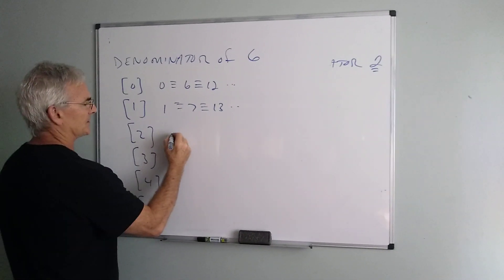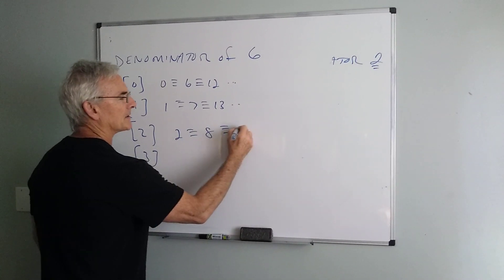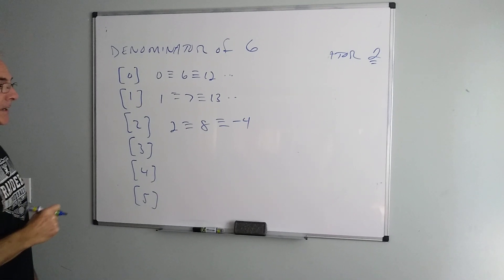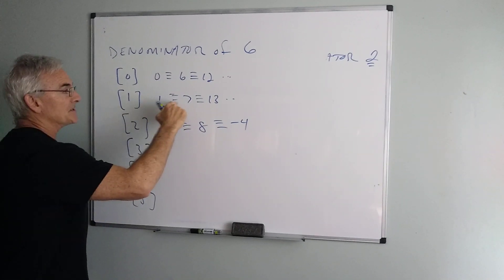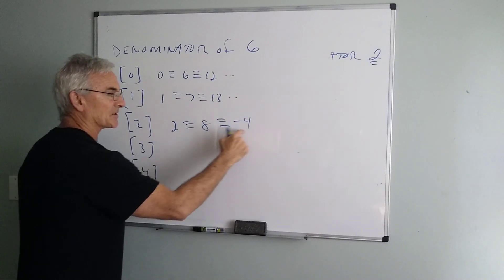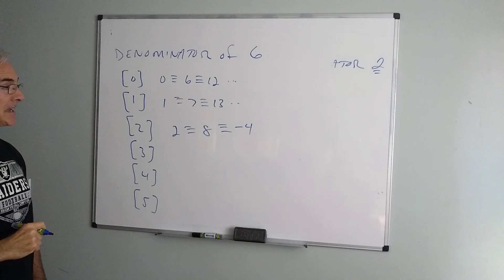So the question is, if I said 2 is equivalent to 8, that's fine. What about negative 4? Would that also work? Well, first of all, notice that the difference remains 6. So because the difference remains a multiple of 6, negative 4 would also be in that equivalence class. Okay?